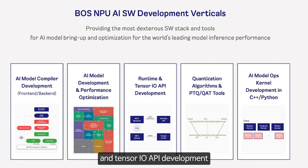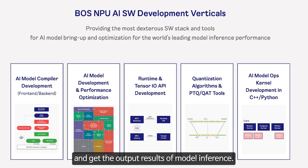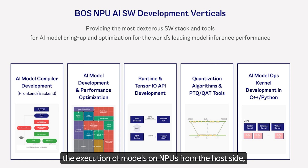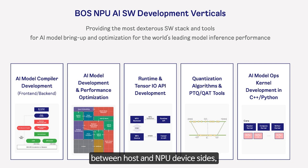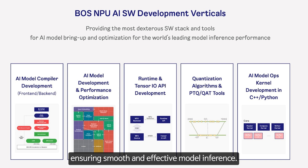The third vertical is runtime and tensor IO API development to load AI model binaries and get the output result of model inference. The development of runtime APIs enables the execution of models on MPUs from the host side. The development of tensor IO APIs facilitates efficient input and output data transfer between host and MPU device, ensuring smooth and effective model inference.